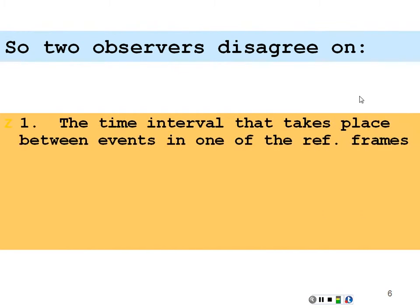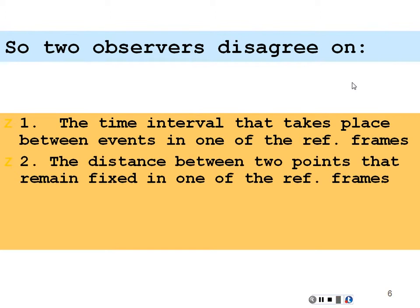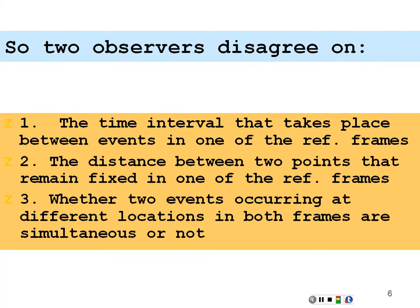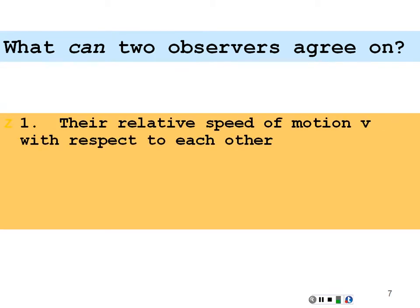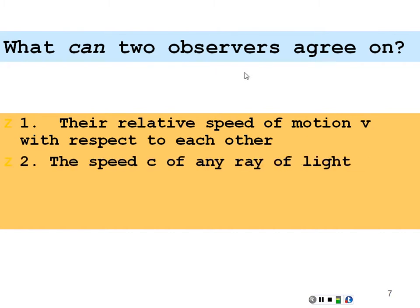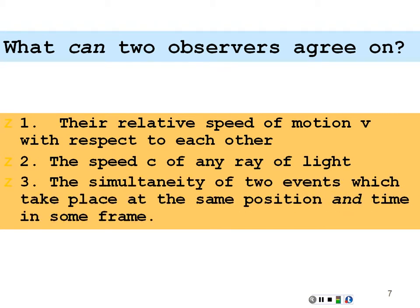Two observers disagree on the time interval between two events in one reference frame, and the distance between two points that remain fixed in one frame — dealing with time dilation, length contraction, and whether two events at different locations are simultaneous or not. They'll disagree on simultaneity. What can two observers agree on? The relative speed of motion between the two frames — that speed V is agreed to be the relative speed. And the speed c of any ray of light in either frame. All rays of light travel at the speed of light no matter which frame you're in. We can also agree on the simultaneity of two events that take place at the same position and time in some frame.